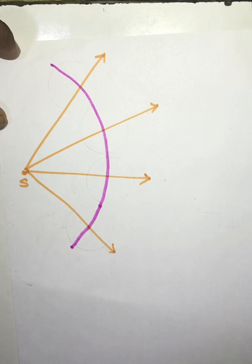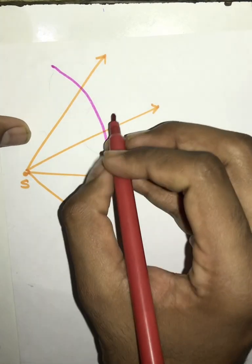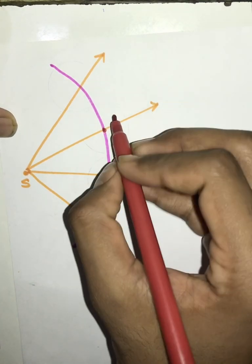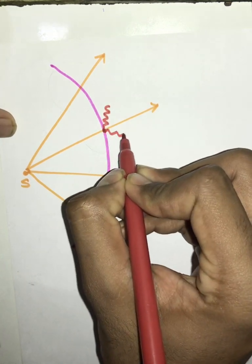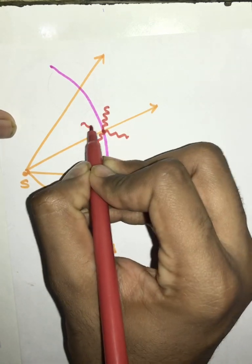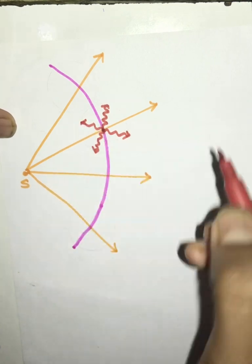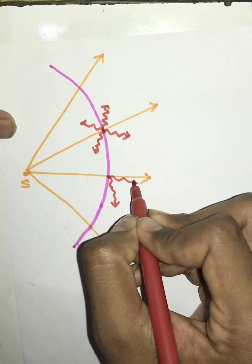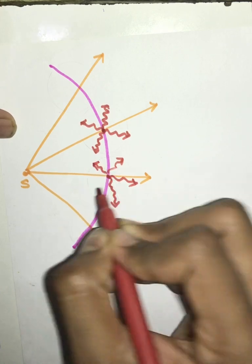Every point on the wavefront acts as a secondary source of light and will emit light in all possible directions. Let's consider this point on the wavefront — this point will emit light in all possible directions in the form of a transverse wave. The same will happen with this point, and this point will also emit light in all possible directions in the form of a transverse wave, acting as a secondary source of light.